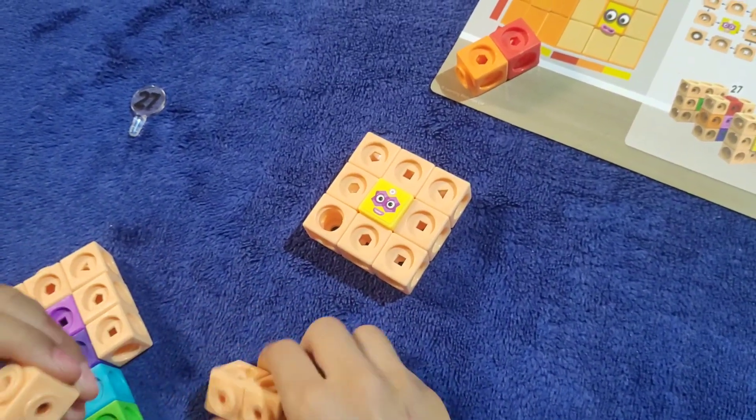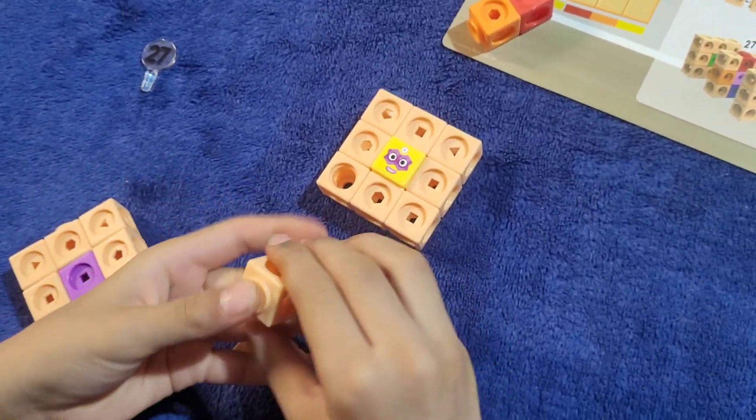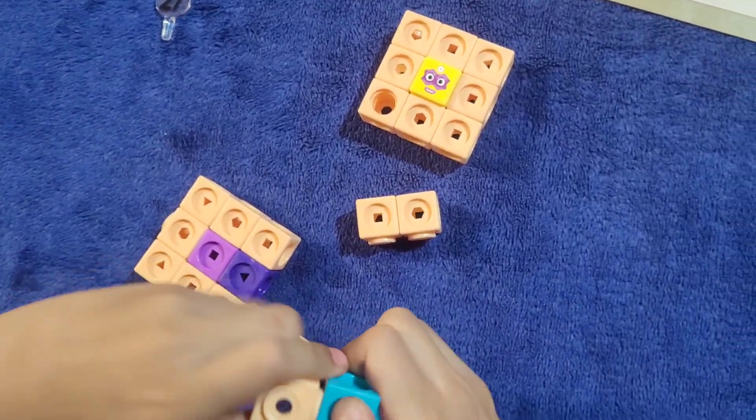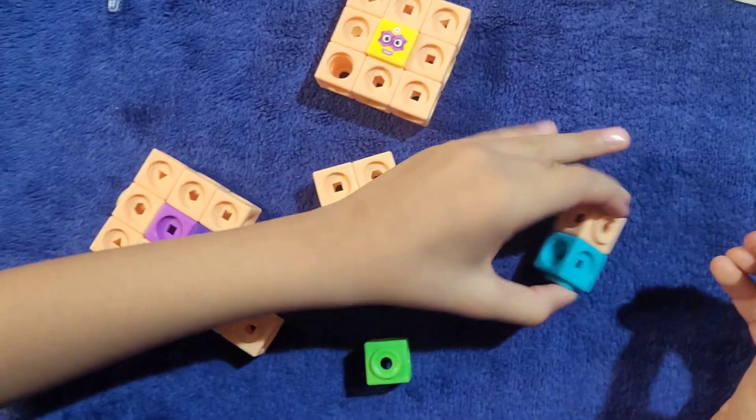Ooh, 27 is looking quite good right now. This is our first double connector block. Let's use it now.